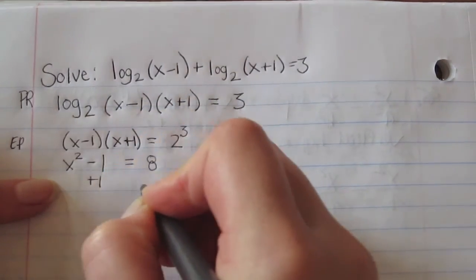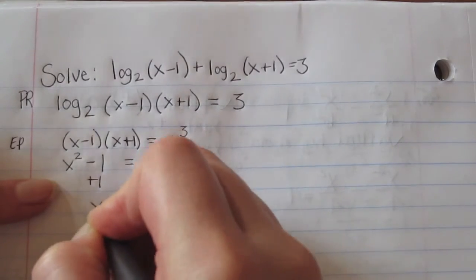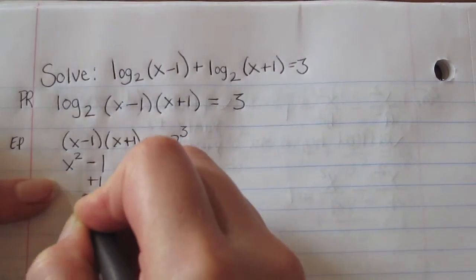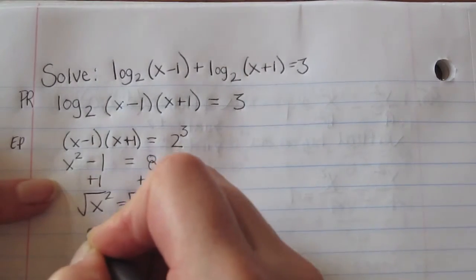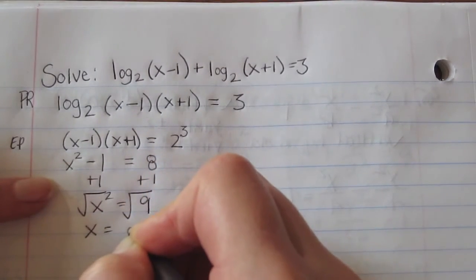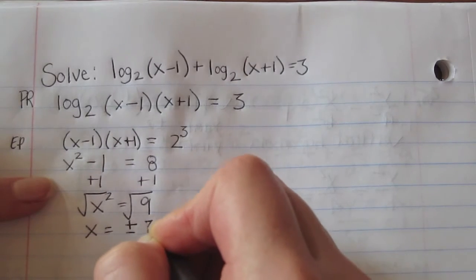Add 1 to each side, so x squared equals 9. Take the square root of each side, so x equals plus or minus 3.